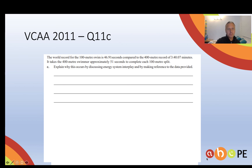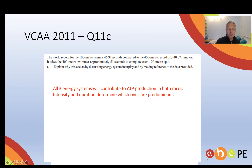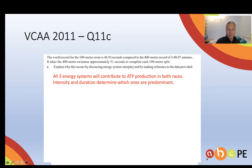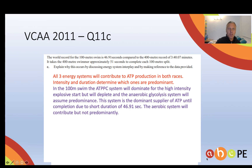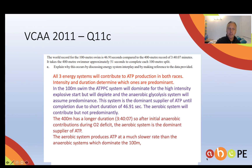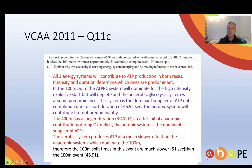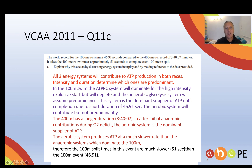Let's have a look at the answer. Generic statement first. Then talking about the 100 being anaerobic. Talking about the 400 being longer duration — therefore the aerobic system produces ATP at a slower rate, and therefore split times are slower. Good use of data. That is a full-mark answer.